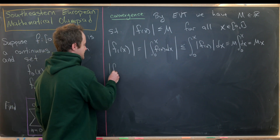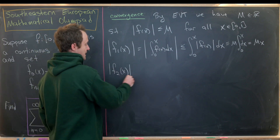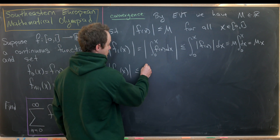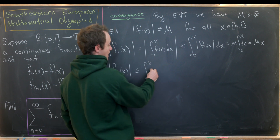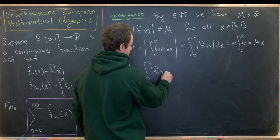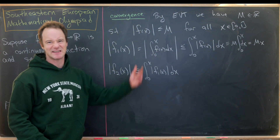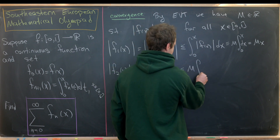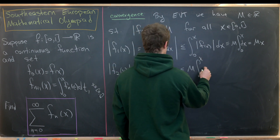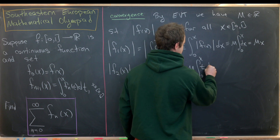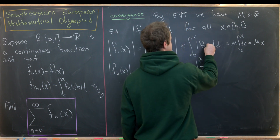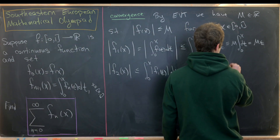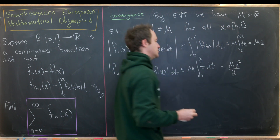Now we'll play the game again with f₂. We have |f₂(x)| ≤ ∫₀ˣ |f₁(t)| dt ≤ M · ∫₀ˣ t dt. Taking the antiderivative and plugging in the endpoints, this equals M·x²/2. Note that earlier all of those should have been t's as the integration variable.